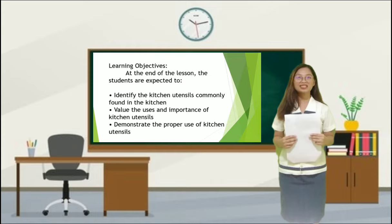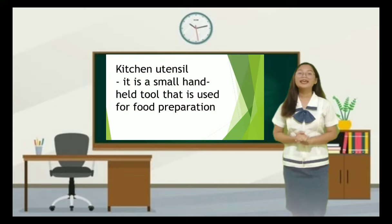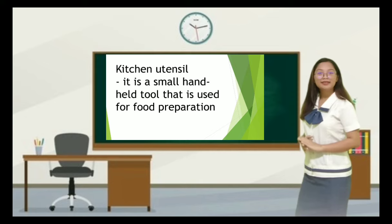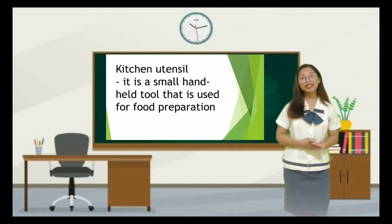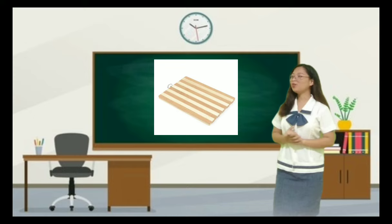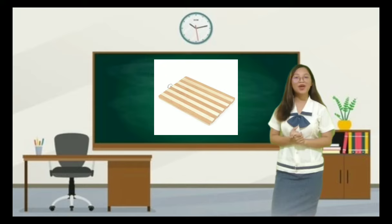Class, what is a kitchen utensil? It is a small handheld tool used for food preparation. Now let us identify the different kitchen utensils commonly found in the kitchen with their functions and uses. Please don't answer in chorus — raise your hand if you want to answer.